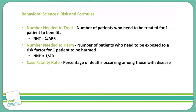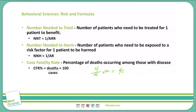Finally, the case fatality rate is the percentage of deaths that occur among those with disease. We calculate it as the number of deaths divided by the number of cases, multiplied by 100 to get our percentage. For example, if we have 10 patients with meningitis and 4 of them die, we do 4 divided by 10, times 100, giving us a case fatality rate of 40%. This is measured over a certain period of time.